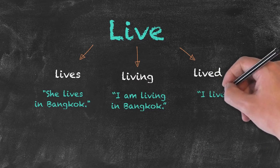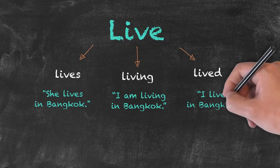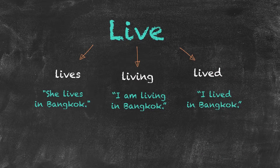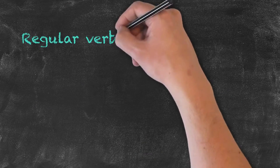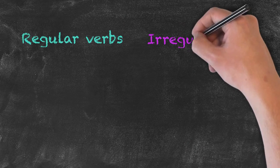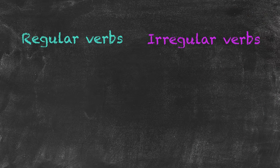Or 'I lived in Bangkok,' meaning the past. Another difference with our verbs has to do with whether or not the verb is regular or irregular.